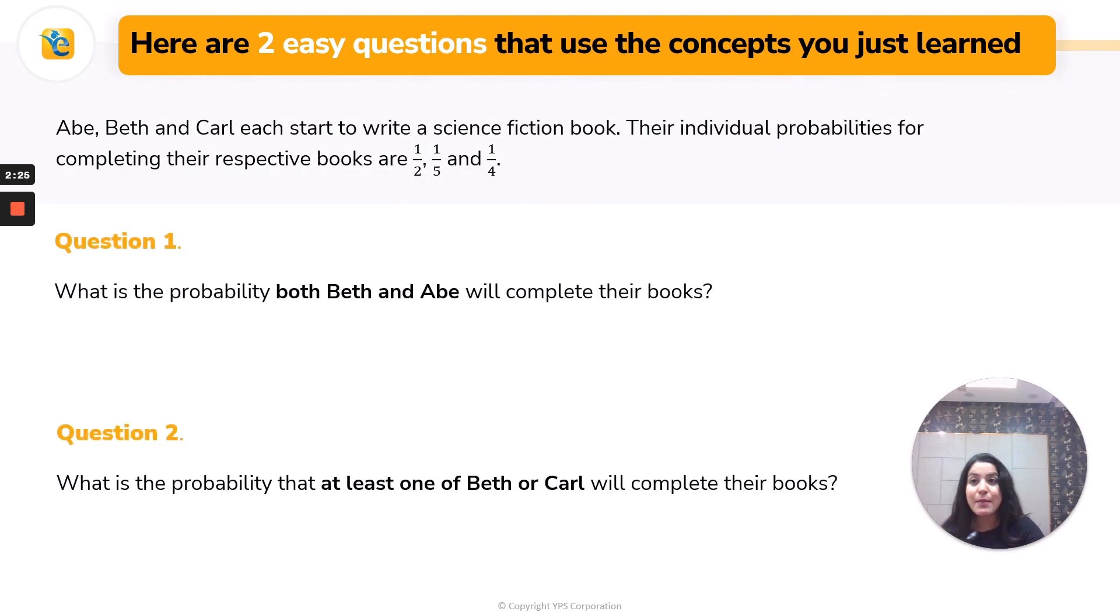Abe, Beth, and Carl start writing a science fiction book. Individual probabilities of completing the books are here. First is probability that Beth and Abe complete - as we just learned in our concepts. And the second is at least one of them. Again, directly from the concepts. Here you multiply, here you use this formula, and that's it. Here you get the answers. This is a simple application of the concepts that you saw.